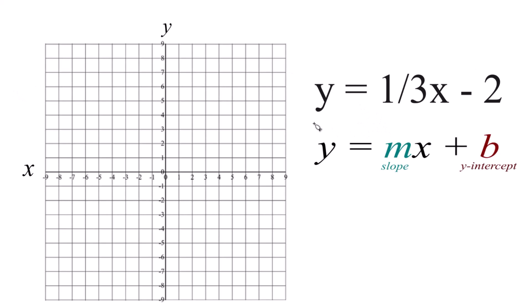In this video, we'll graph the equation for y equals one-third x minus 2. We're going to use slope-intercept form to do it. You can also use a table of values to do this. You'll get the same graph either way.